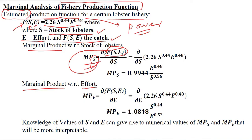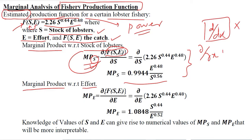Primarily, we are differentiating with respect to S. Once we do this, we get this answer — and I hope you can easily do this because this is differentiation. However, it comes with the partial sign instead of the usual 'd' used in ordinary differentiation. We will be using the partial sign because we have two independent variables, S and E. This is a DIY — do it yourself. MPS is here, which is the answer of the first differentiation.